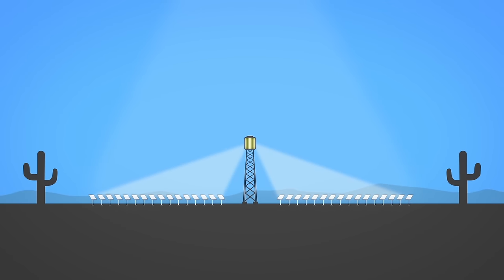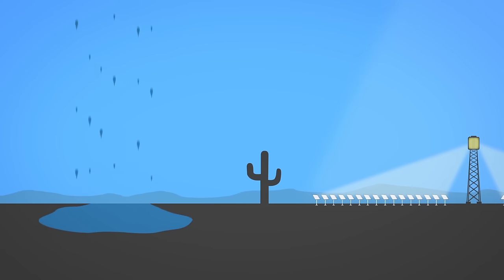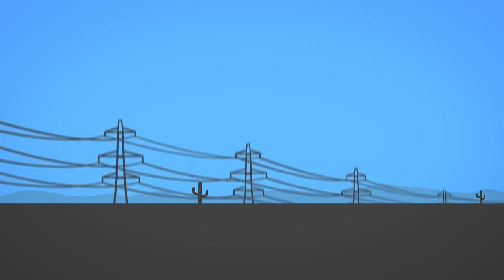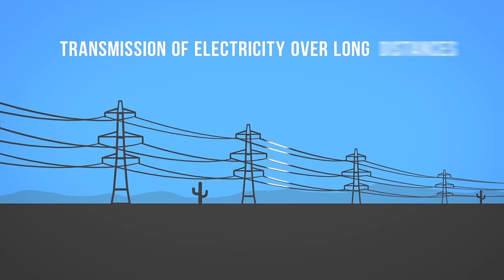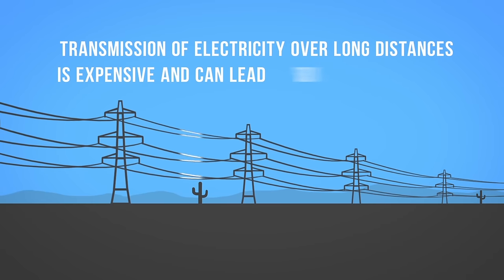A key disadvantage to CSP is that installations are normally located in remote desert areas. Given that steam turbines are required to produce electricity, water access and evaporation are concerns for the viability of the technology. In addition, transmission of electricity over long distances is expensive and can lead to distribution losses.